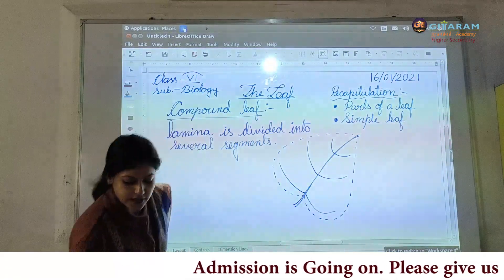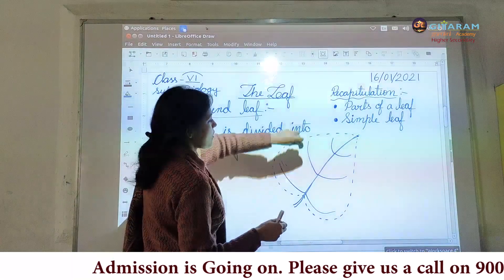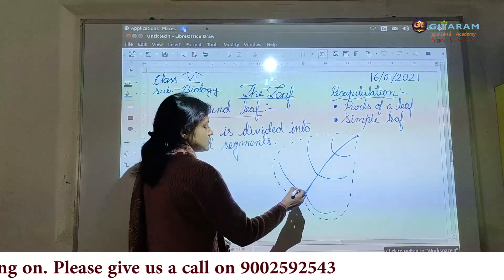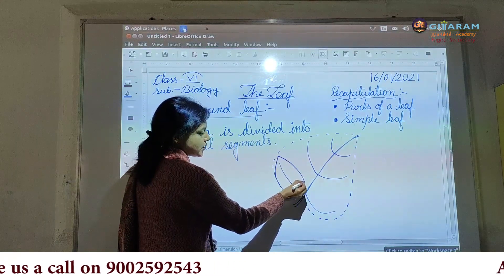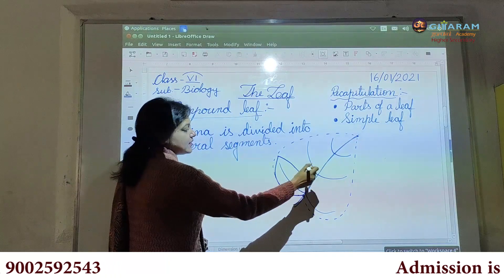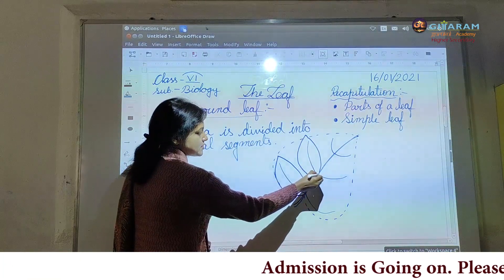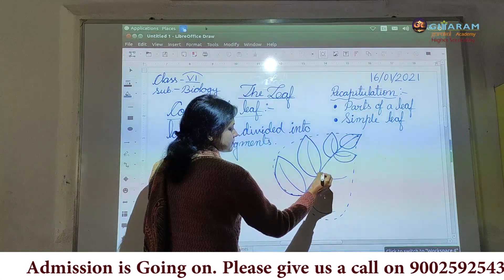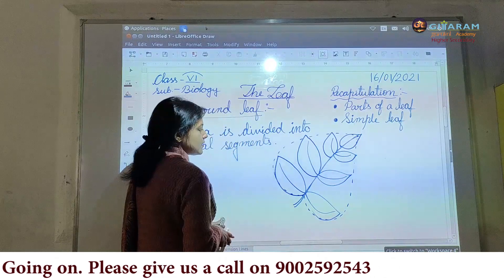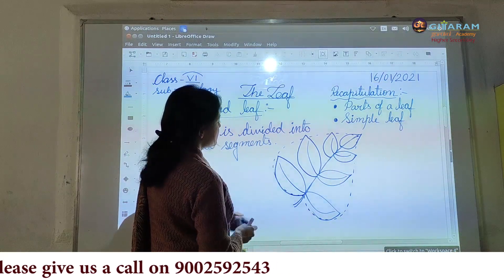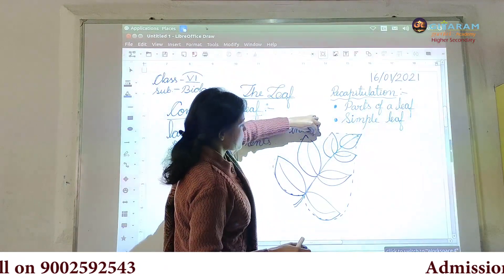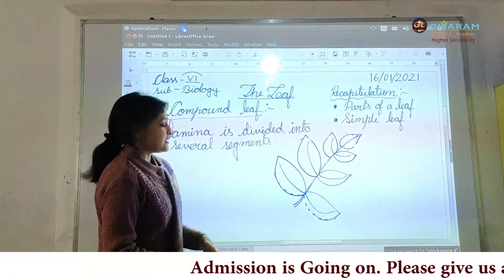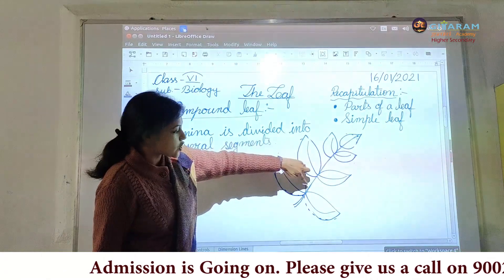Now suppose here one incision is formed, here also another incision is formed, and here also, at certain portions. These incisions are reaching up to the mid-rib — there you can see. Again I am drawing another one. Now I am removing these portions from this diagram, and then it will be clearly visible to you. The incisions which were formed reach up to the mid-rib.